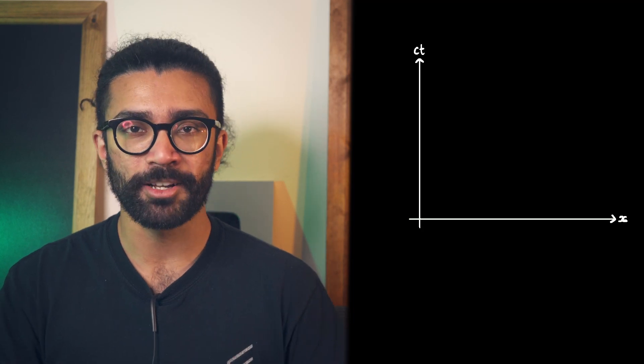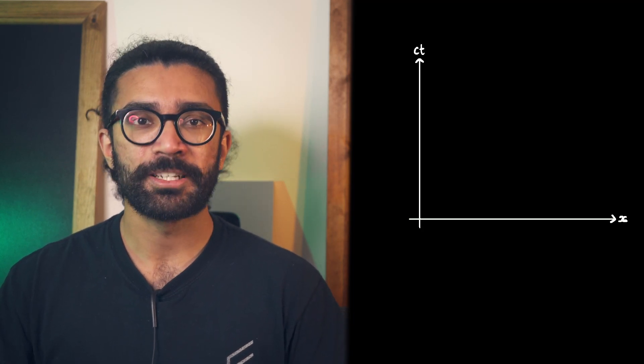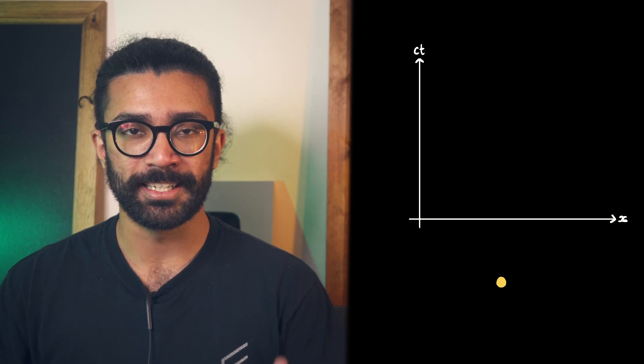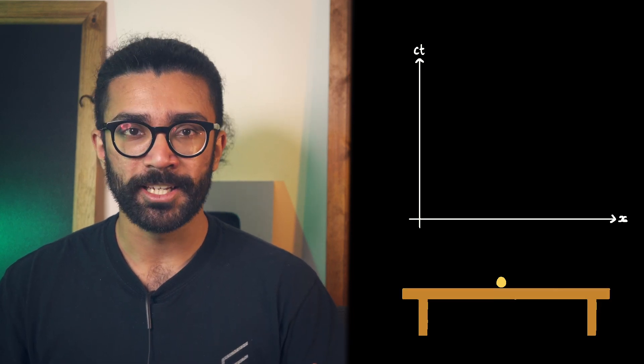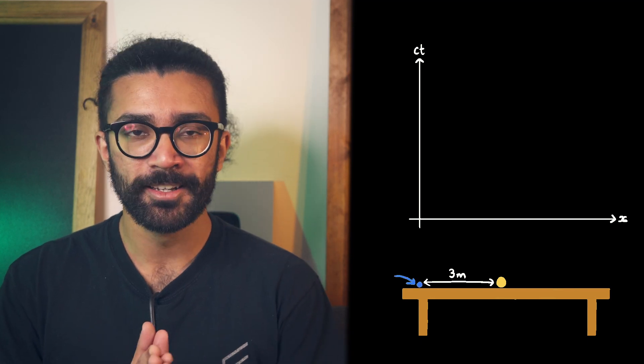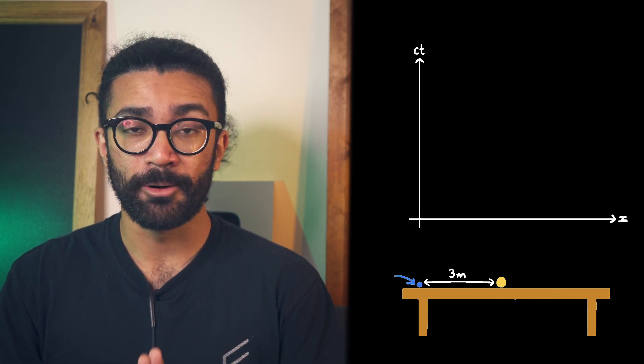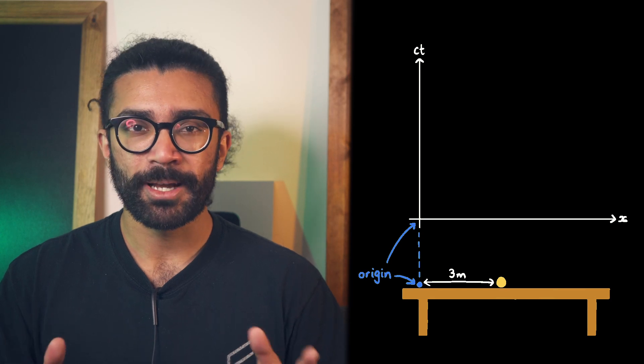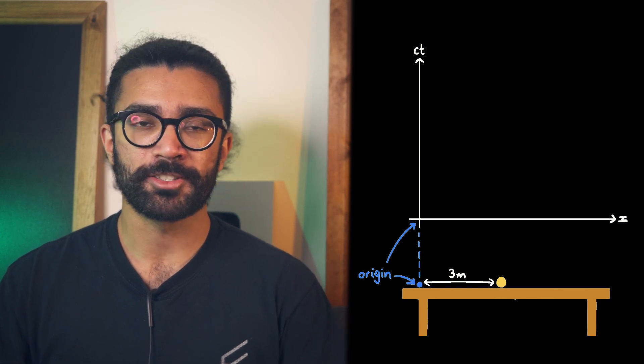First things first, what exactly is a space-time diagram, and what is it trying to show? Well, on a very simple level, it's just a graph that we can use to show the position of objects as time passes. For example, let's imagine we have a table tennis ball sitting on a table. It's not moving anywhere, and let's say it's 3 meters away from this point here, which we will randomly choose to be our origin. It doesn't really matter what point we choose.